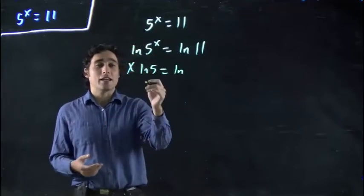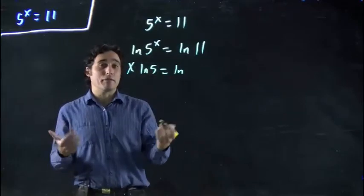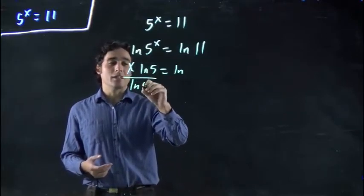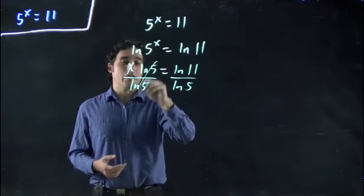Well, this is just the same kind of math we've been doing. Now I have something multiplied by x. How do I get rid of it? Divide both sides by ln of 5. And I should write that as 11. These cancel.